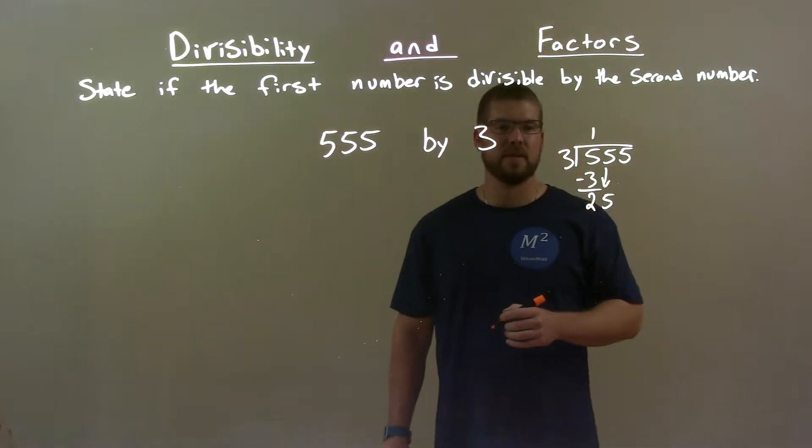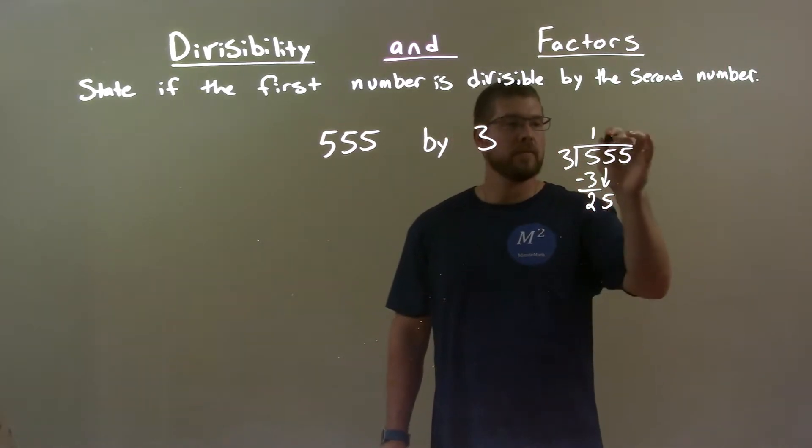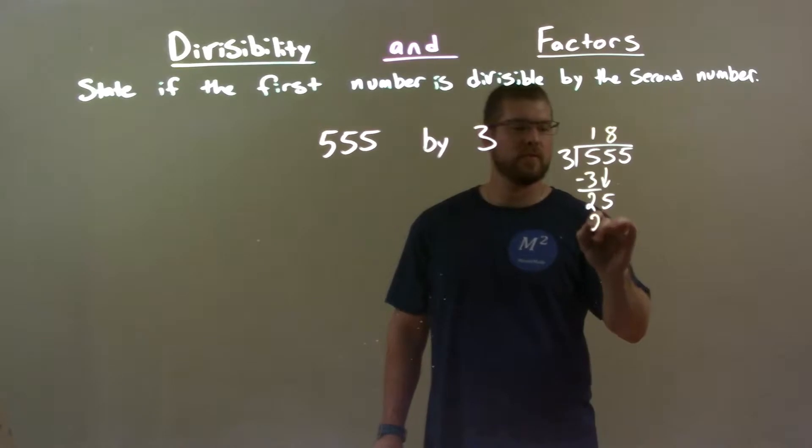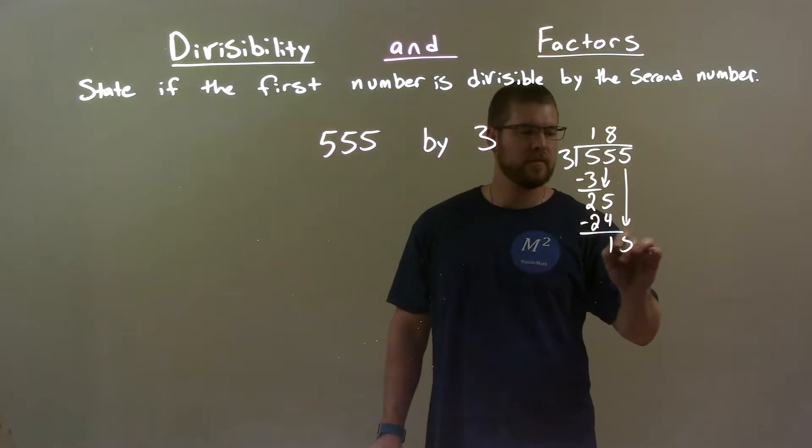Does 3 go into 25 evenly? Well, 3 goes into 24, right? 8 times. 8 times 3 is 24. Subtract, we get a 1. Bring down this 5.